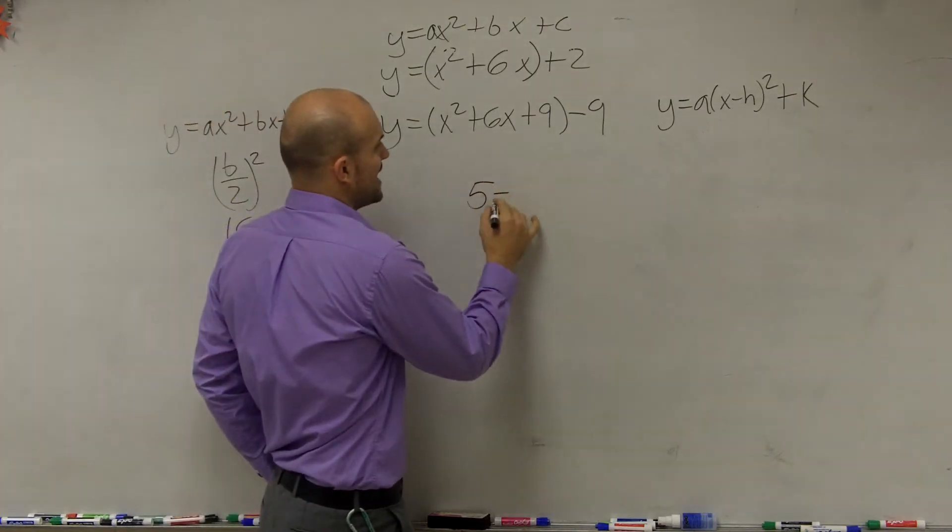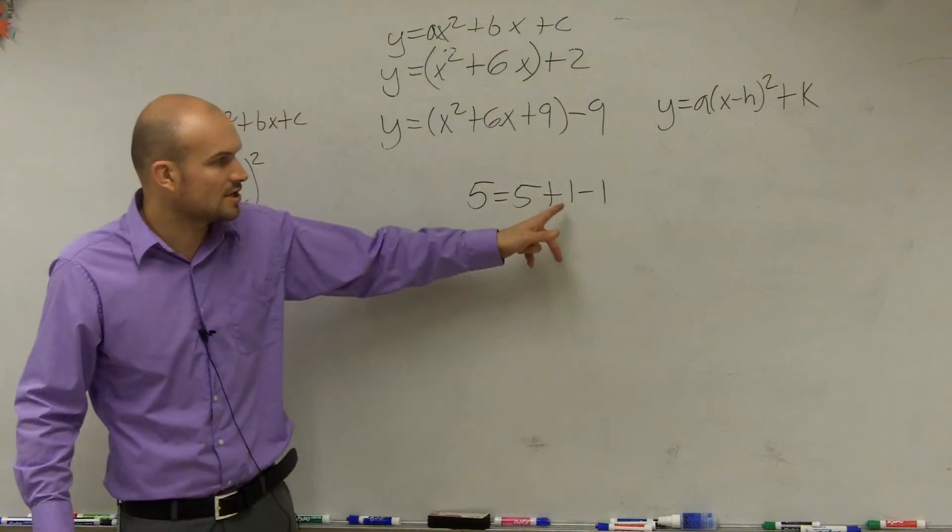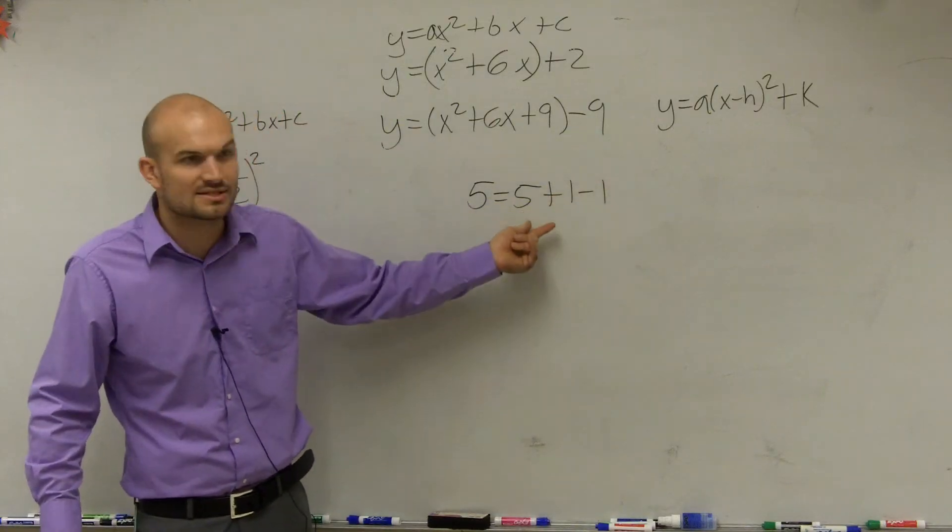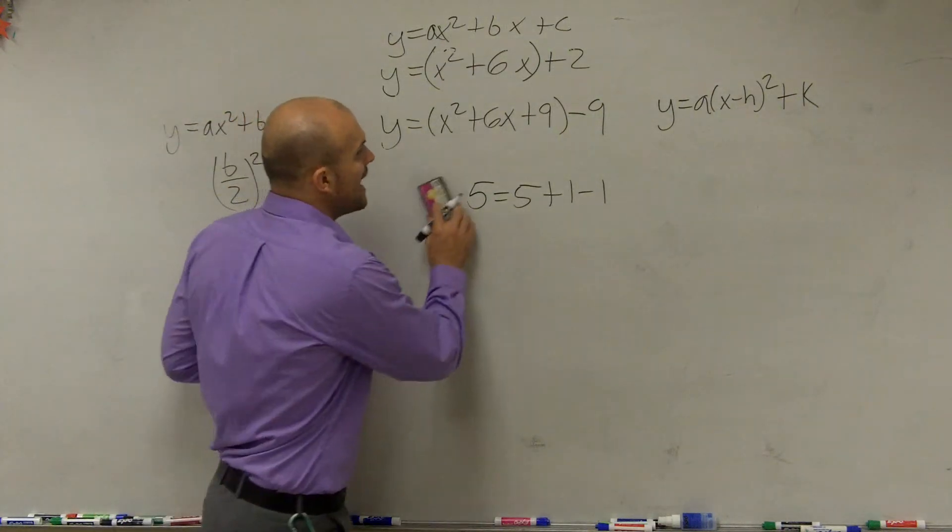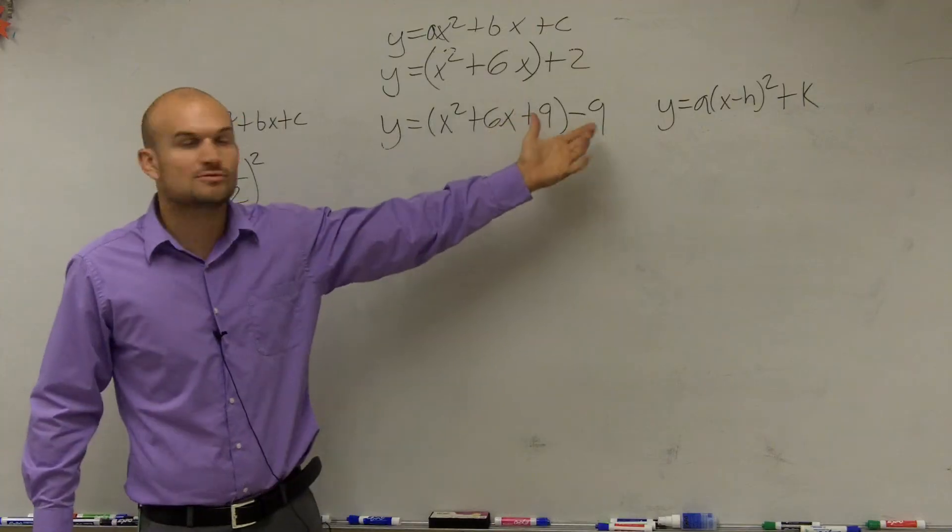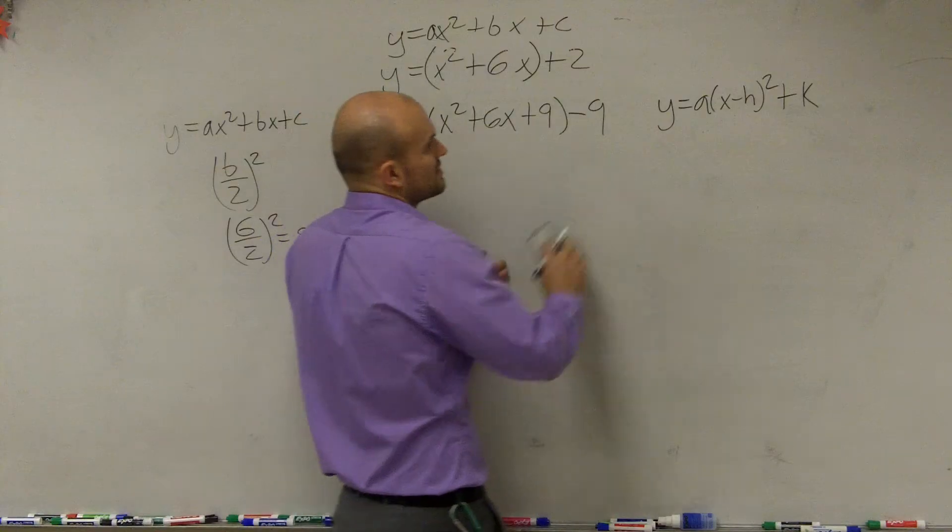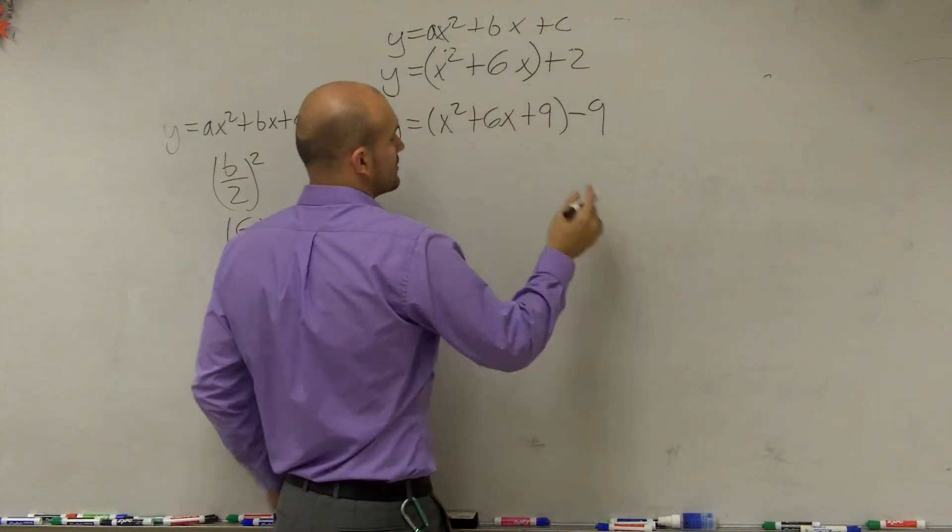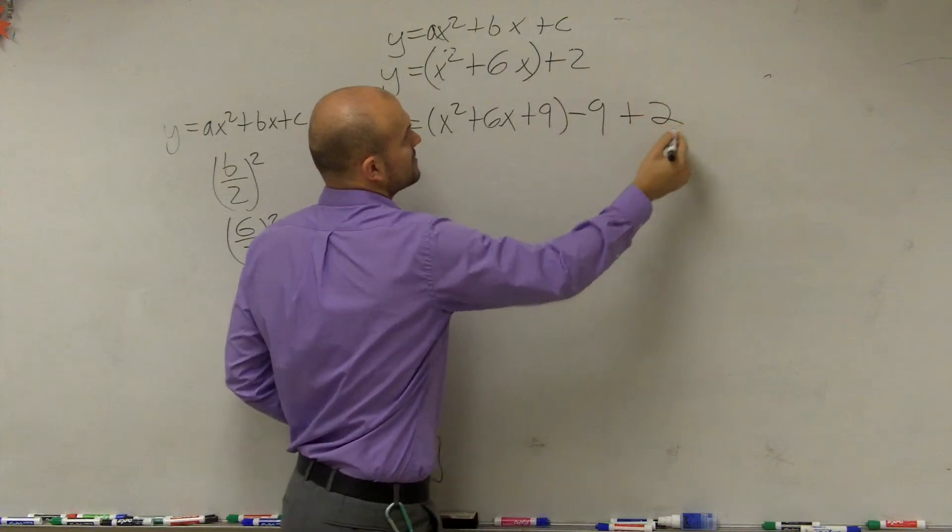You could say 5 equals 5 plus 1 minus 1, right? As long as you add and subtract, that balance is still the same, right? The values are the same. So now, when we complete the square to get the vertex form, we can just add and subtract on the same side, but then don't forget we still have that 2 there. So let's erase the vertex form here because it's getting in the way. So therefore, now I'm going to add 2.